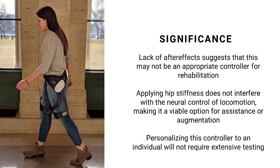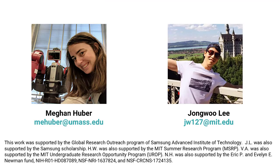Second, applying hip stiffness does not appear to interfere with the underlying neural control of locomotion, meaning this may be a viable option for assisting or augmenting human locomotion. And lastly, because the timescale of adaptation and de-adaptation is very quick—within one stride—personalizing this controller to an individual will not require extensive testing. If you have any further questions or would like to discuss this further, please reach out to either myself or my colleague Jungwoo Lee.